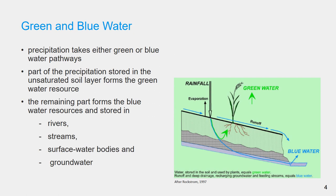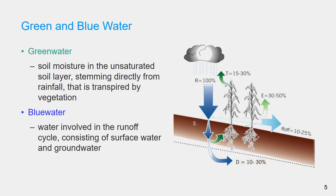When precipitation reaches land, it takes either green or blue water pathways. The water stored in the unsaturated soil layer forms the green water resources, and the water stored in rivers, streams, surface water bodies, and groundwater forms the blue water resources. Green water refers to the water in the root zone available for uptake by plant roots, and its principal flow is by evapotranspiration through the vegetation canopy into the atmosphere. Blue water is involved in the runoff cycle, consisting of surface water and groundwater.